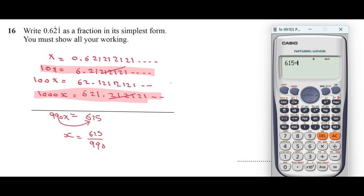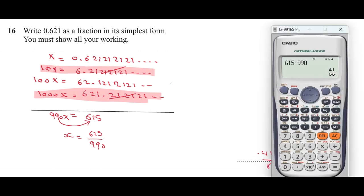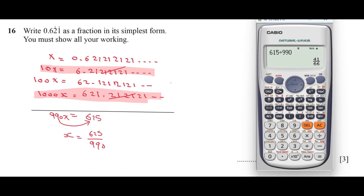615 over 990 equals 41 over 66. To be sure of your answer, let's check it using calculator. All we have to do is write the decimal 0.621212121 till you see the arrow on your calculator screen, then press equal. The answer is 41 over 66. My answer is good, thank you.